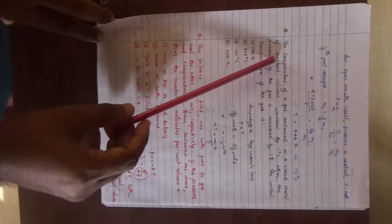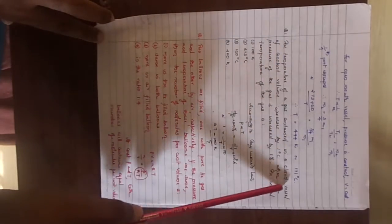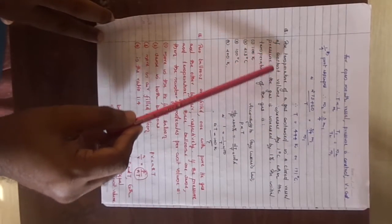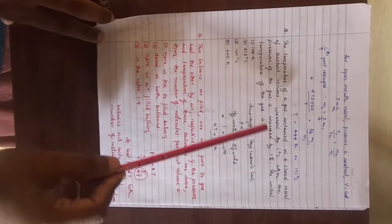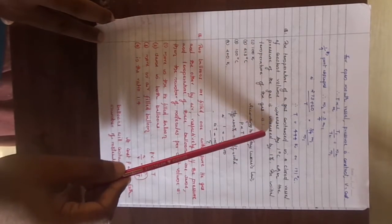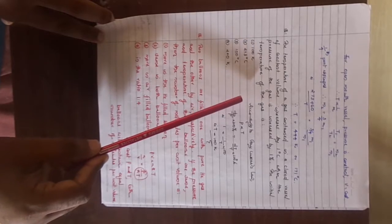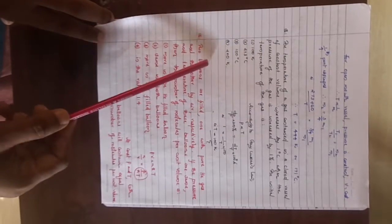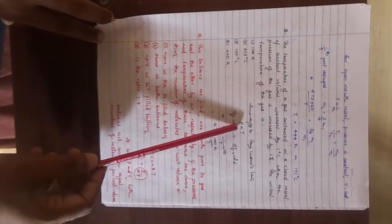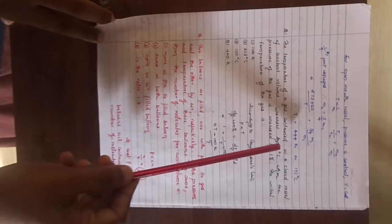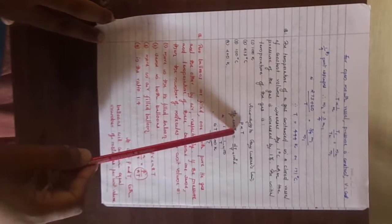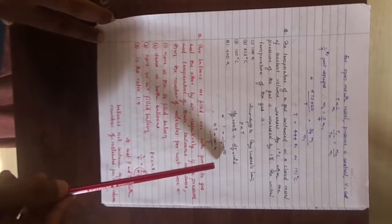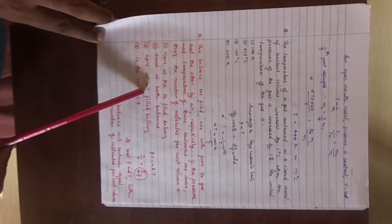Look at another question. The temperature of a gas contained in a closed vessel of constant volume increases by 1 degree Celsius when the pressure of the gas is increased by 1 percent. The initial temperature of the gas? So we can just use P by T is a constant. So P proportional to T. Here only the percentages are very less and hence we can use the error concept. So delta P by P equals delta T by T. The delta T is given as 1, so 1 percent equals 1 by T into 100. And you get the value T is equal to 100 K.